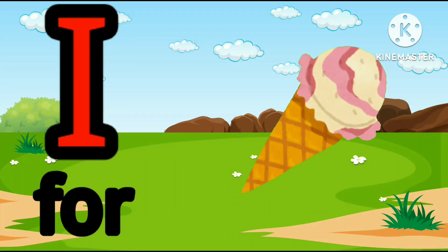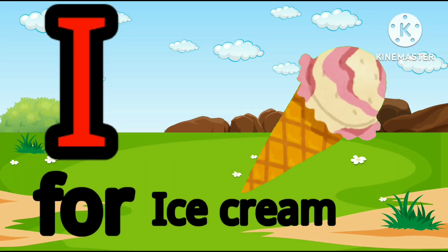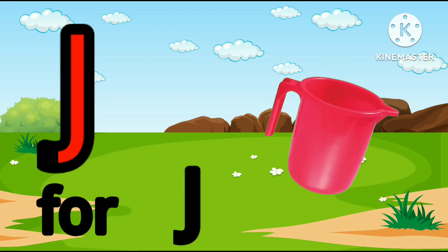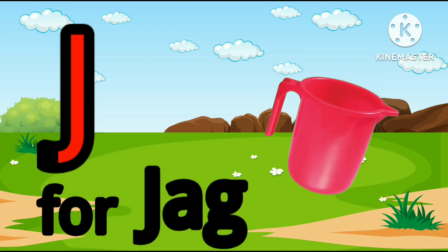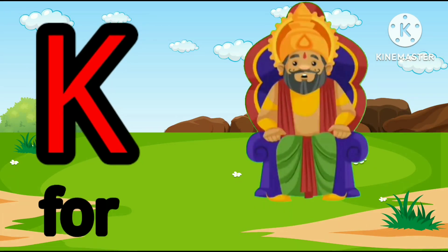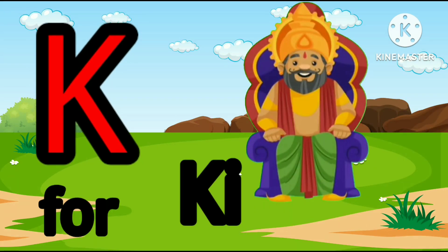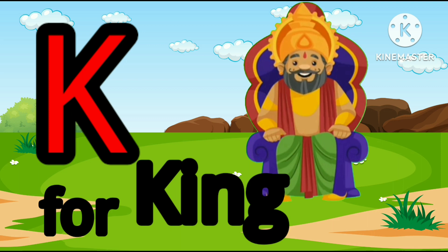I. I for ice cream. Ice cream means ice cream. J. J for jug. Jug means jug. K. K for king. King means raja.